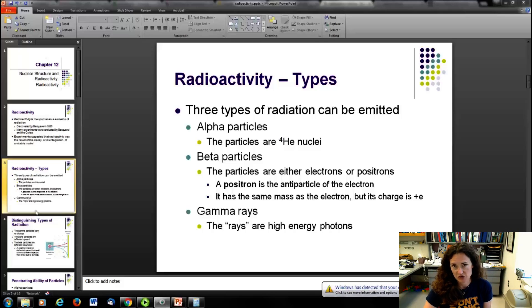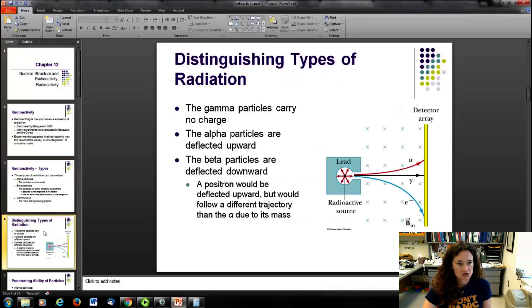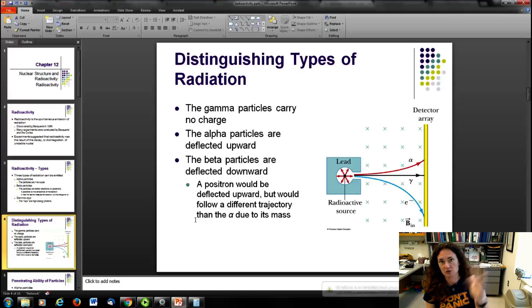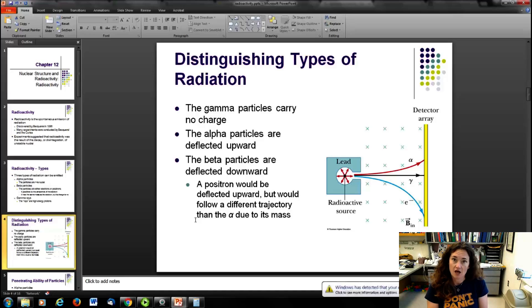So gamma ray particles carry no charge. If they're emitted from a source and you travel them through a region of magnetic fields, they'll just travel straight towards your detector. Alpha particles, though, because F equals QV cross B, charged particles are going to form circles in magnetic fields. The positively charged particles will travel in one direction and the negatively charged particles will travel in the opposite direction. You can tell the difference between gamma rays, positively charged alpha particles, and negatively charged electrons in that way.